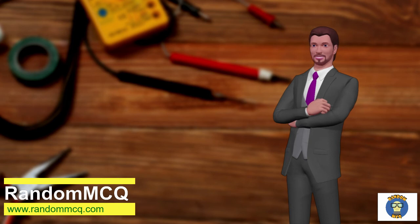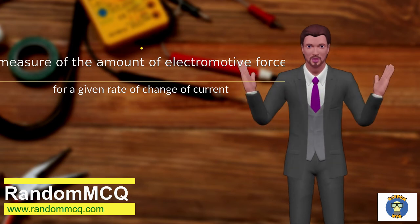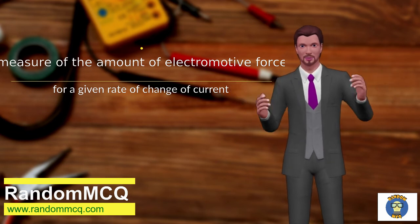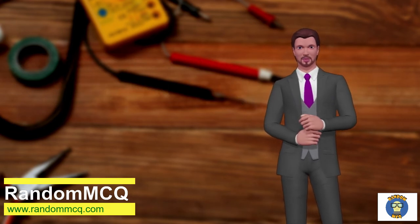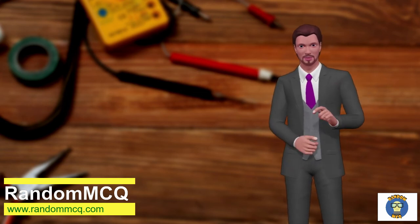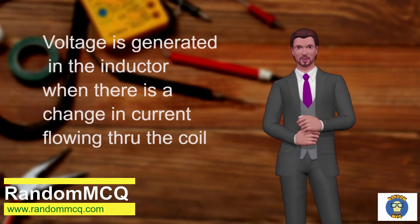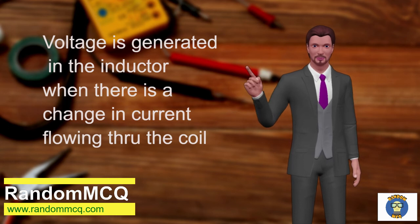What is inductance? Inductance is a measure of the amount of electromotive force, or voltage, generated for a given rate of change of current. For example, an inductor with an inductance of 1 henry produces an emf of 1 volt when the current through the inductor changes at the rate of 1 ampere per second. Voltage is generated in the inductor when there is a change in current flowing through the coil.